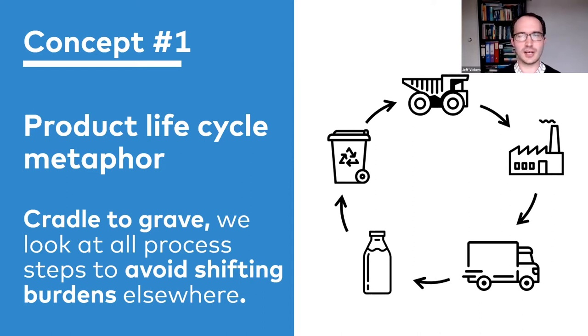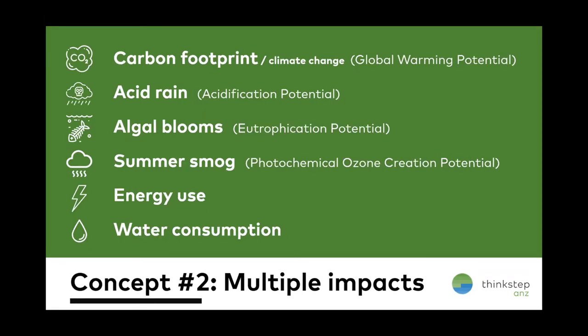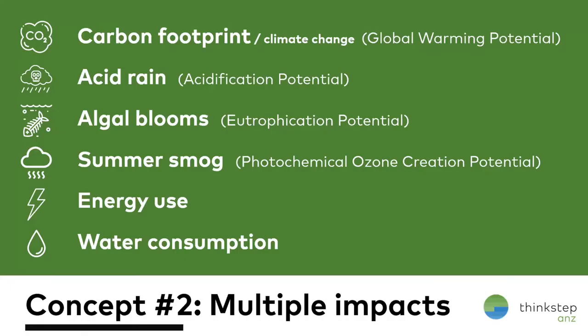We're trying to look at all those different life cycle stages rather than just one, to avoid shifting problems elsewhere — whether that's elsewhere in the supply chain or downstream to other life cycle stages. The next concept is avoiding shifting impacts from one environmental compartment to another — for example, reducing your carbon footprint while contributing to increased acid rain, summer smog, or eutrophication which causes algal blooms. We consider multiple impacts across the full life cycle to help avoid shifting problems.